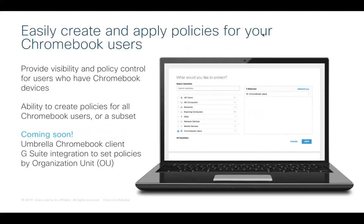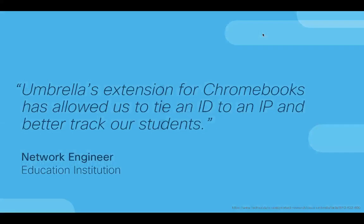With the Umbrella Chromebook client, you also gain per-user visibility and policy, so you can enforce policy-based protection whether users are on or off campus. You can easily provide visibility and policy control for users with Chromebook devices, create direct policies for all Chromebook users or a subset, and coming soon, the Umbrella Chromebook client G Suite integration will allow policies to be set by organizational unit, or OU, in addition to individual users.